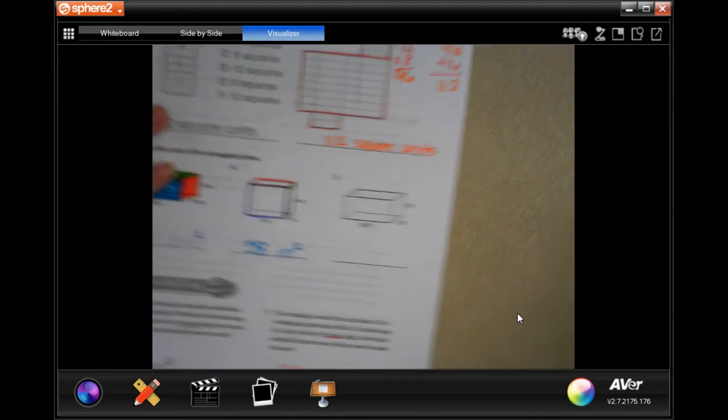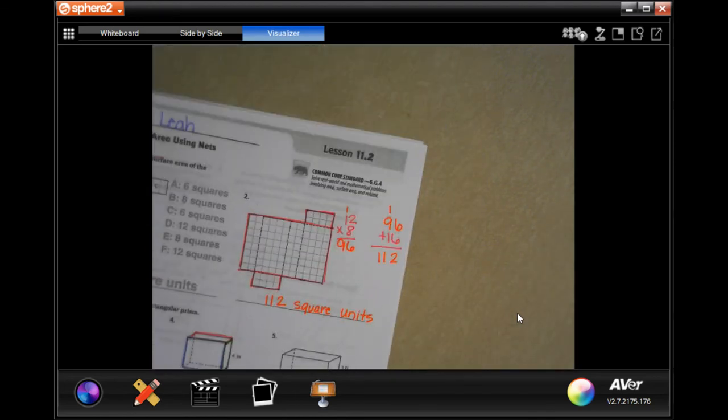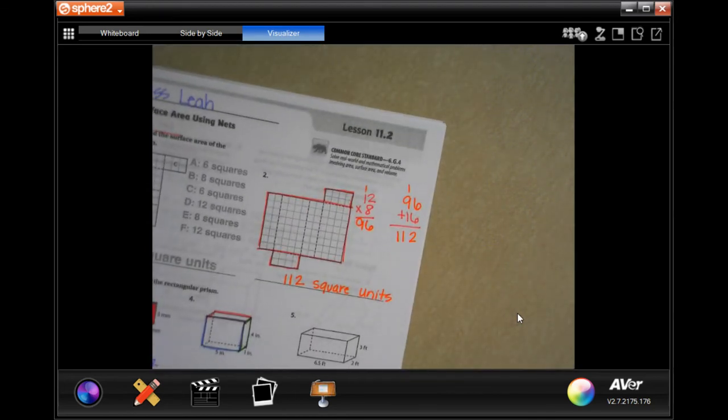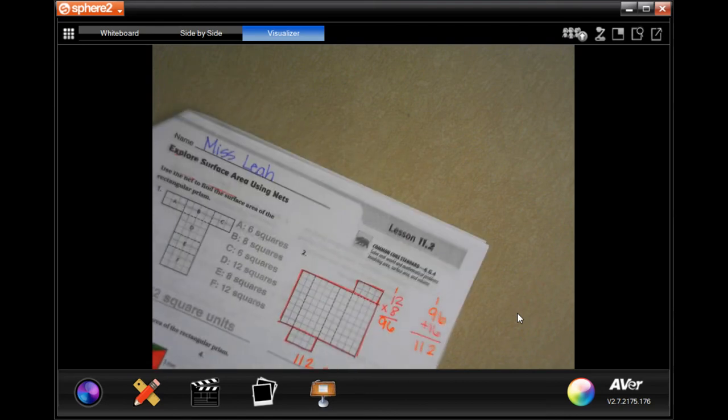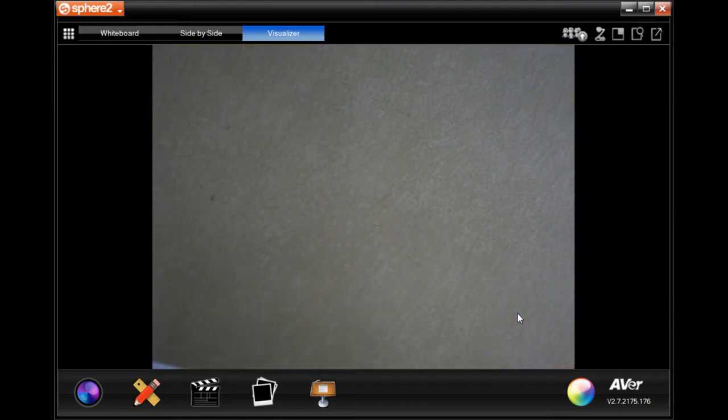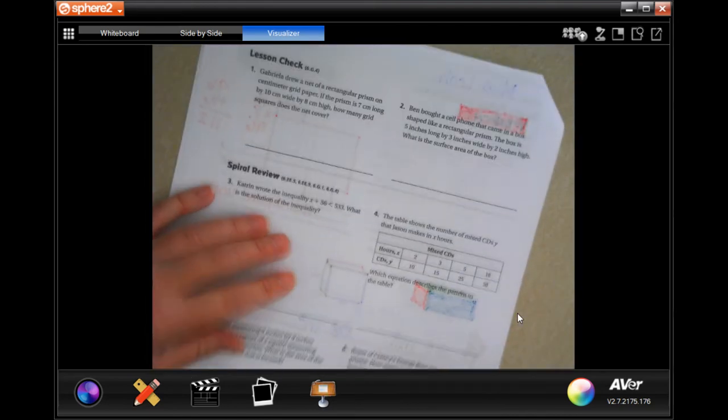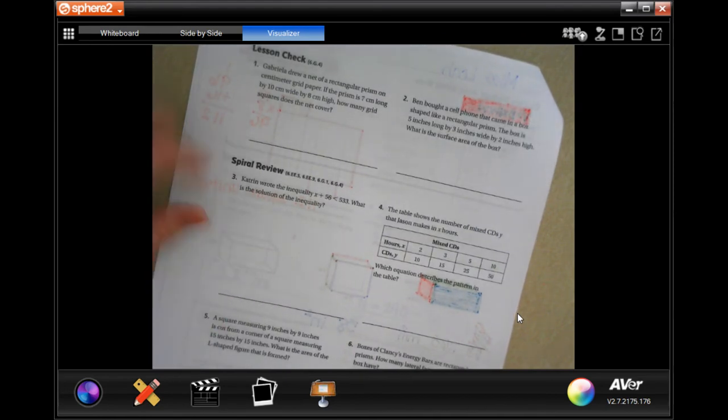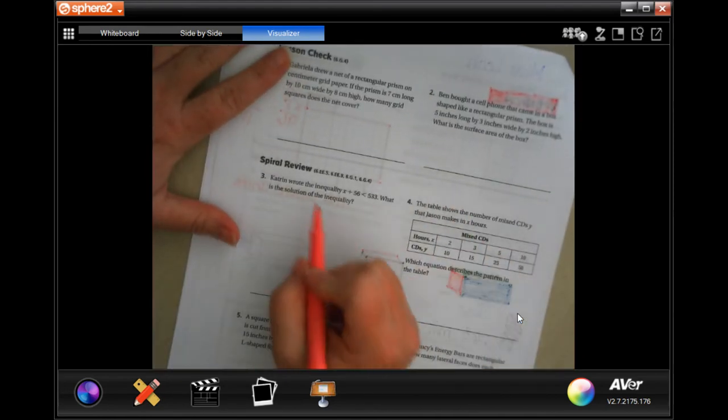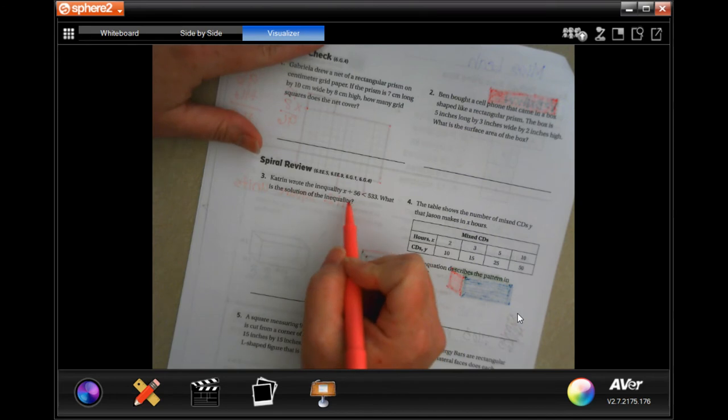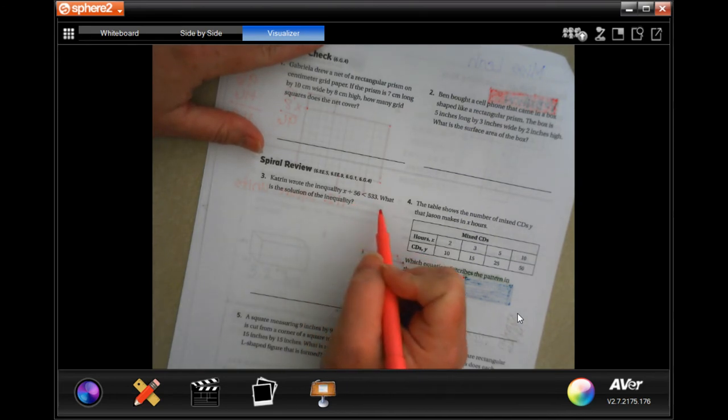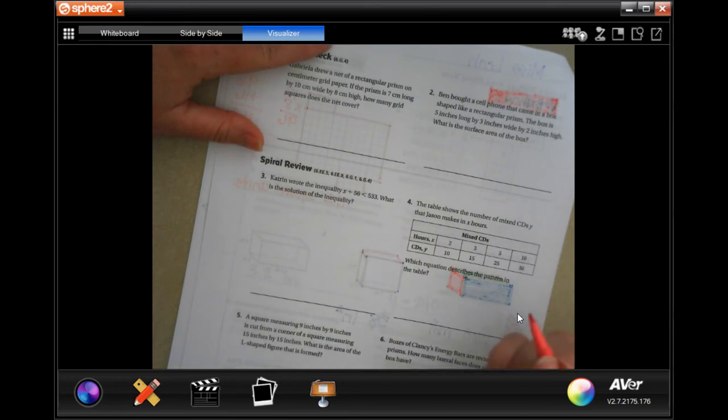All right. So, we're going to go into the back where you guys are going to do a lesson check, just like always. And we're going to go down and do a spiral review. Sorry. You can see my coloring through the other side of the paper, but we'll make it work.